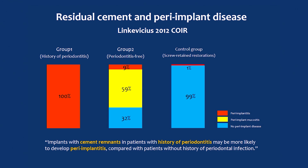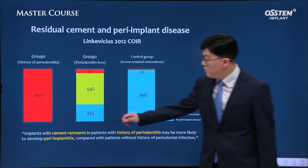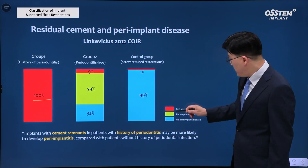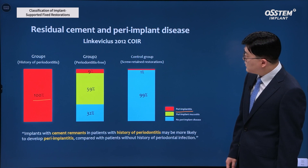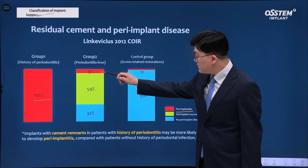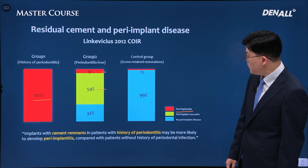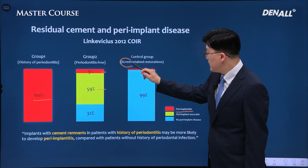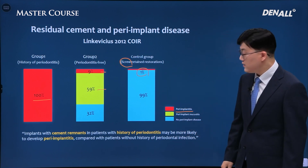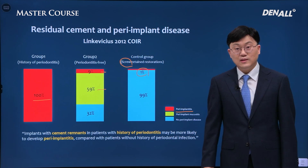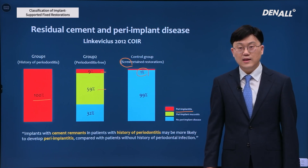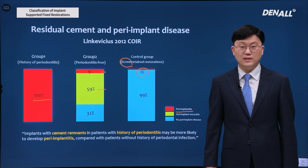Looking at Dr. Linkovicius' 2012 literature, in cement type prosthesis, periimplantitis disease was observed 85% of the time. In the case of cement type, when the patient has a history of periodontitis, periimplantitis was observed 100% of the time. If the patient had no history of periodontitis, periimplantitis was observed 9% of the time and periimplant mucositis about 60% of the time. On the other hand, in the case of screw type prosthesis, periimplantitis was observed only 1% of the time. According to this literature, cement in cement type prosthesis can result in periimplantitis.